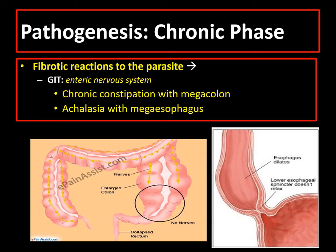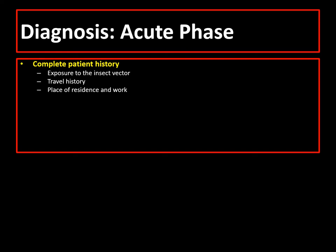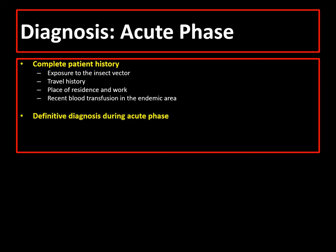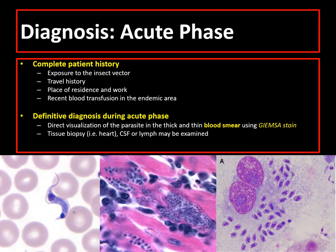The diagnosis of Chagas disease in the acute phase begins with a complete history with emphasis on exposure to insect vector, travel history, place of residence and work, and possibly recent blood transfusion in the endemic area. Definitive diagnosis during the acute phase relies on the direct visualization of the parasite in the thick and thin blood smear using Giemsa stain. Tissue biopsy from the heart, CSF, or lymph nodes can also be examined.